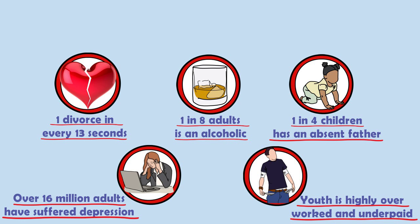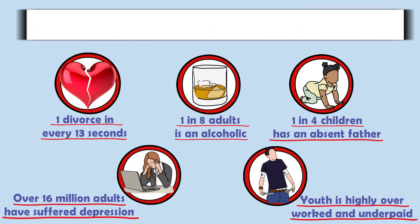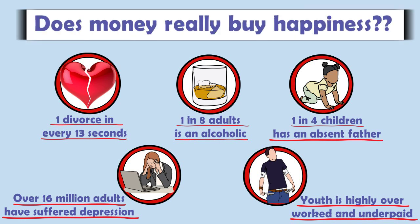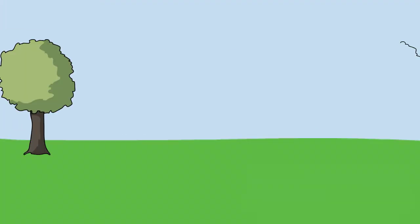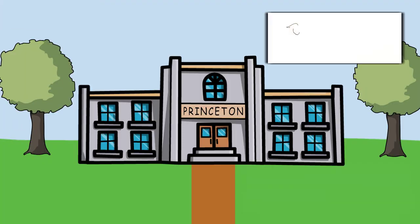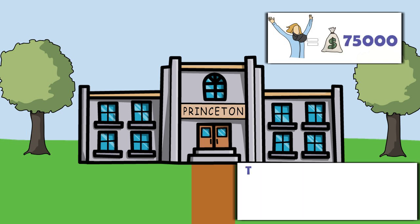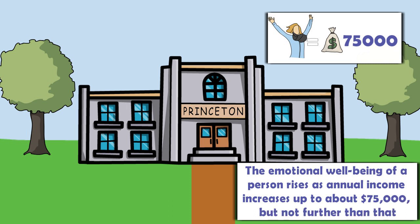Youth is highly overworked and underpaid, so the question is does money really buy you happiness? According to research conducted by Princeton University, happiness and income are correlated but only up to $75,000. The emotional well-being of a person rises as annual income increases up to about $75,000 but not further than that.